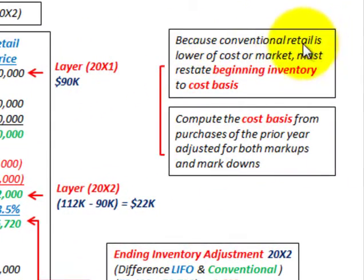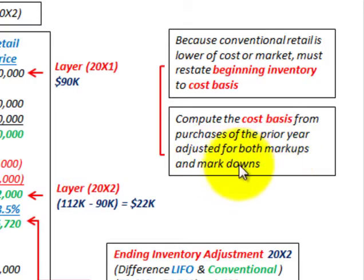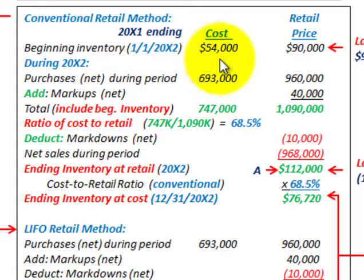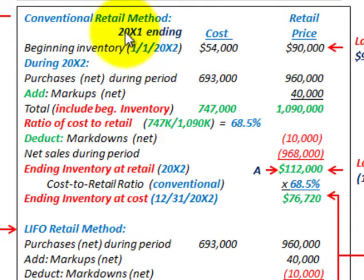Because the conventional retail method is lower of cost or market, we must restate the beginning inventory to the cost basis, computing this cost basis from the purchases of the prior year adjusted for both markups and markdowns. Our beginning inventory here is the ending amount from 20X1, which becomes the beginning inventory for 20X2, shown at both cost and retail price — what they paid for the inventory versus what they charge the customer.